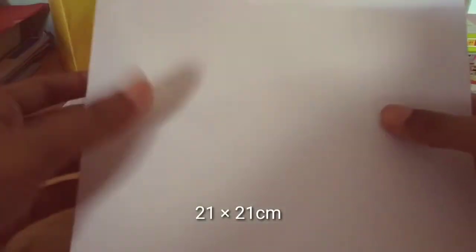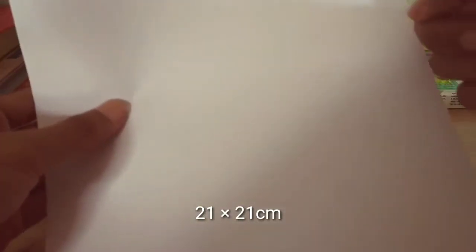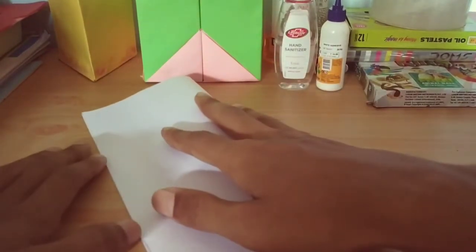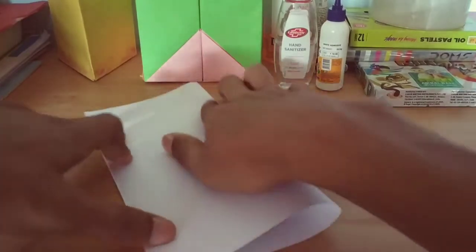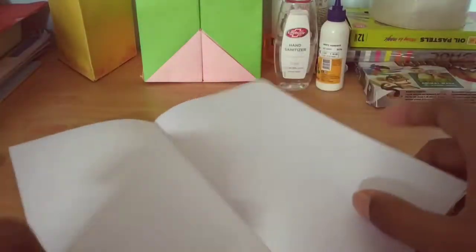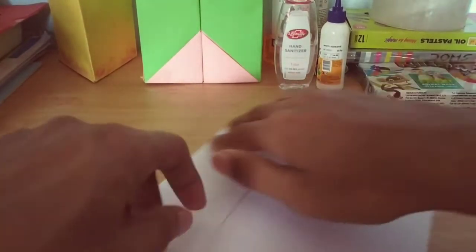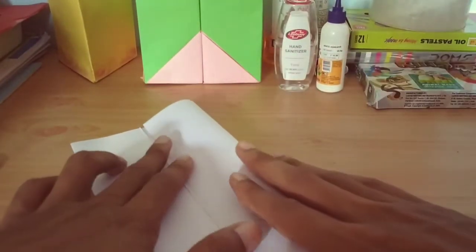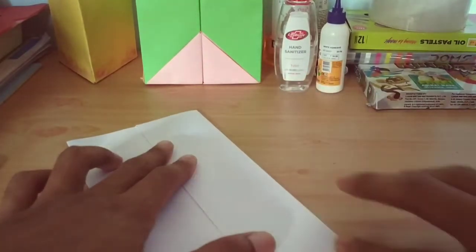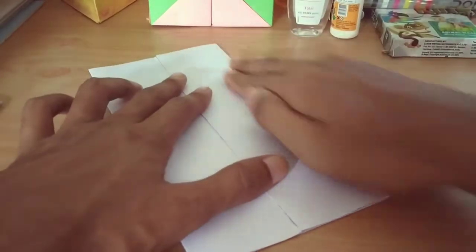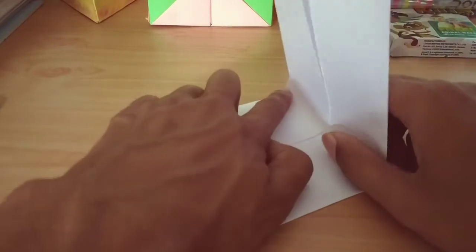So I have cut this section. Now all the sides are equal, 21 centimeter on each side. Now you will fold it once like this in the middle, and again in the quarterly you will fold it. Same in the opposite direction, and then horizontal in this way.